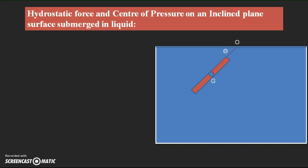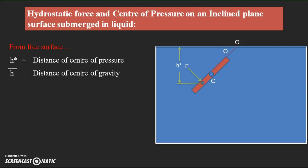Assume G is the center of gravity of the plate, and F is the hydrostatic pressure force acting at the center of pressure. From the free surface, H-star is the distance of the center of pressure from the free surface — that is, the location of the center of pressure — and H-bar is the distance of the center of gravity from the free surface.